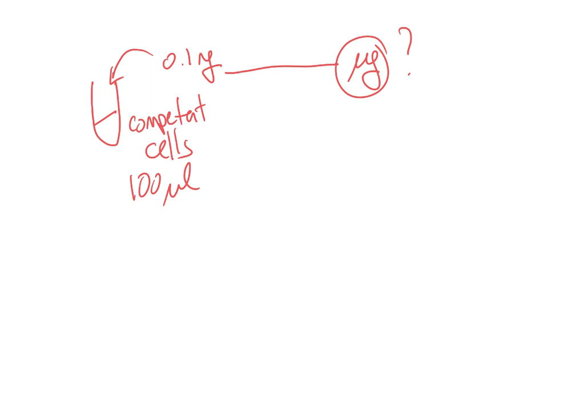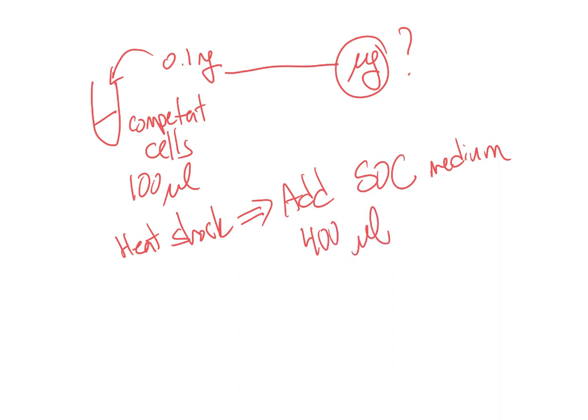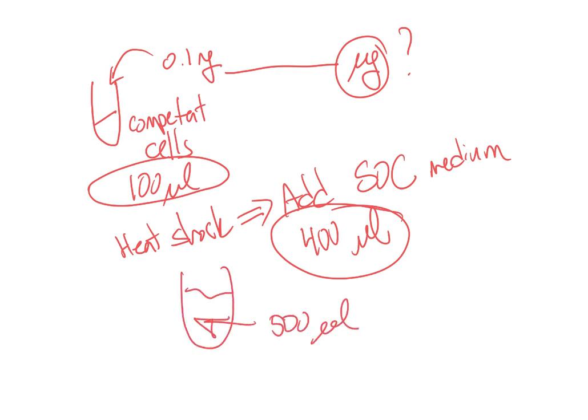We added our DNA and then we heat shocked. The heat shock allows the DNA or forces the DNA to go into the cells. Then we added our SOC, our high nutrient medium. Specifically, we added 400 microliters of that. If you look at the volumes, we can see that if I take 100 microliters of cells and I add 400 microliters, that means in our transformation afterwards we have a total of 500 microliters of liquid that includes cells and SOC medium.